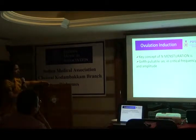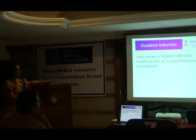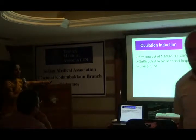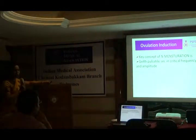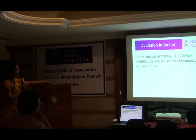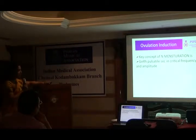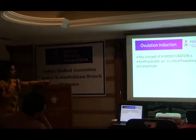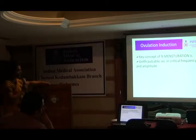The key concept of menstruation and normal fecundity is GnRH pulsatile secretion. It has to be in a critical frequency and amplitude for them to produce an egg and also produce menstruation. This GnRH pulsatility is actually in a plateau stage before the girl attains menarche. Once the pulsatility increases with the critical frequency and amplitude, the hypothalamic-pituitary-gonadal axis gets stimulated and menstruation occurs.